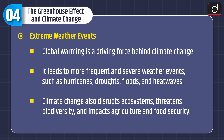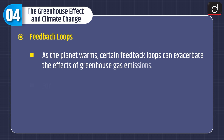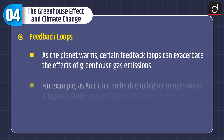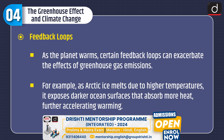Climate change also disrupts ecosystems, threatens biodiversity, and impacts agriculture and food security. Third, feedback loops: as the planet warms, certain feedback loops can exacerbate the effects of greenhouse gas emissions. For example, as Arctic ice melts due to higher temperatures, it exposes darker ocean surfaces that absorb more heat, further accelerating warming.